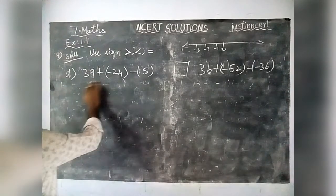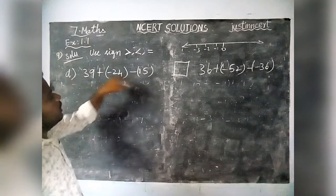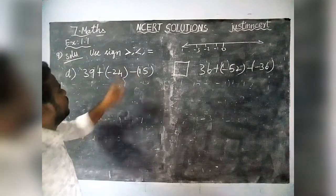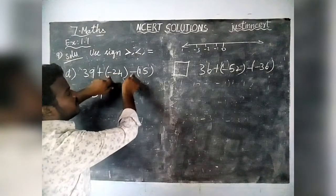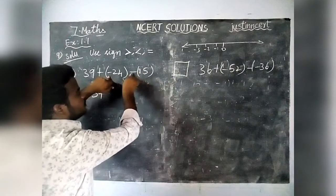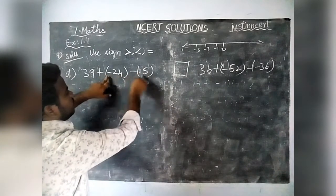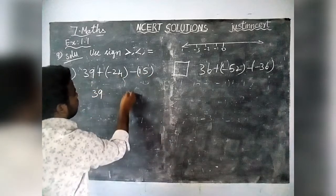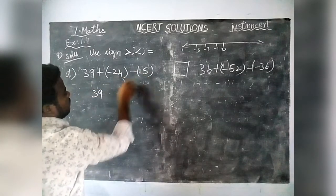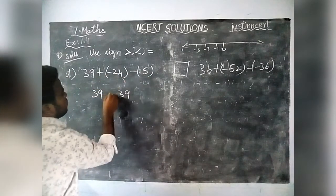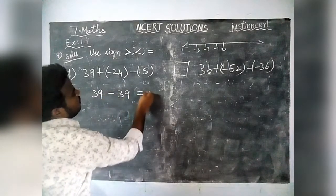Next, option D. On the left hand side, 39 is positive, and we have minus 24 and minus 15. This minus is coming for 15 also. So we add minus 24 and minus 15: 4 plus 5 is 9, 2 plus 1 is 3, and both are minus, so we get minus 39. Then 39 minus 39 is equal to 0.